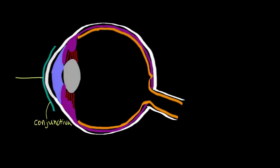So let's follow the ray of light through the conjunctiva. The second thing that the ray of light will hit is this transparent thick piece of tissue that covers the very front of the eye, and that's known as the cornea.